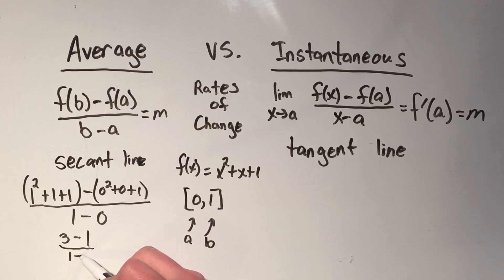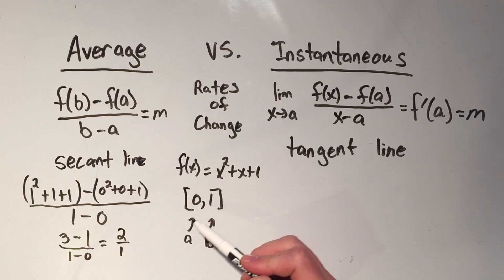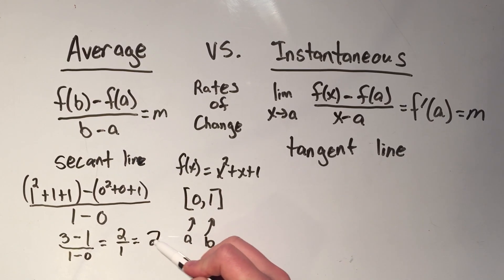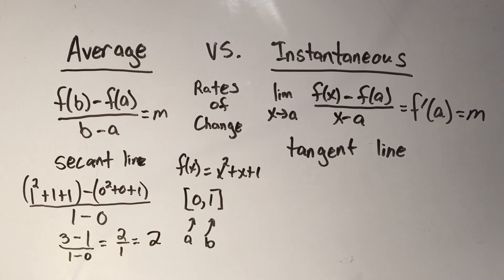All over one minus zero, three minus one is two, one minus zero is one. So our average rate of change of this function on the interval zero to one is two.